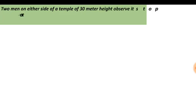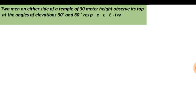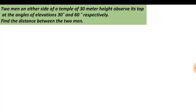Two men on either side of a temple of 30 meter height observe its top at angles of elevation 30 degrees and 60 degrees respectively. Find the distance between the two men. A temple of height 30 meters is given, and the two persons observing the top of the temple from either side with angles of elevation 30 degrees and 60 degrees are also given.